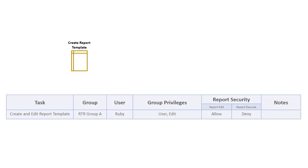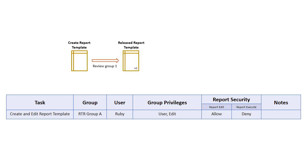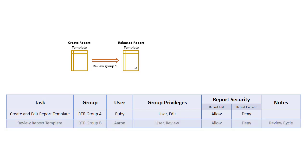Different people in your organization will have different responsibilities with regards to RT reports. One user may be responsible for creating and editing report templates — in this case, Ruby. A different user may be required to review that report template before it's released and can be run against batches — for example, that user will be Aaron.